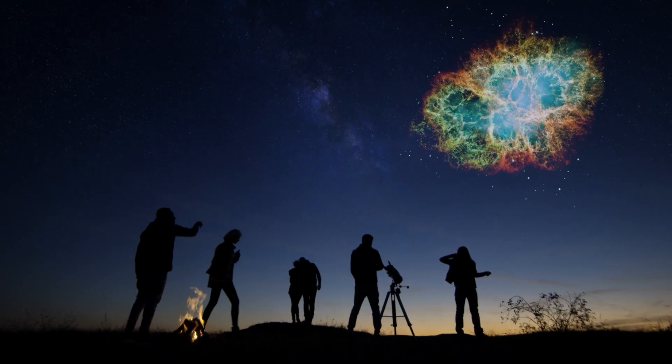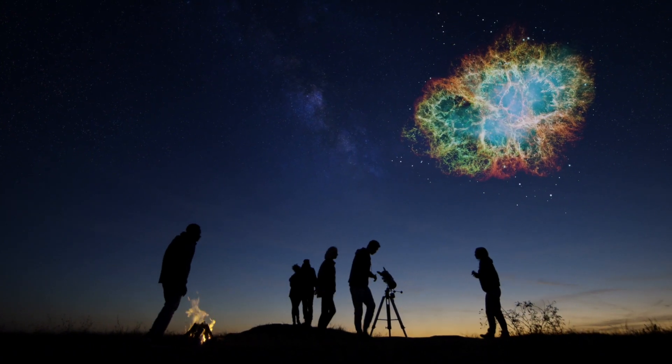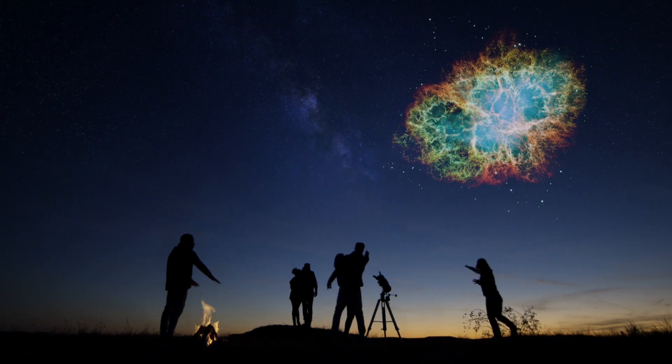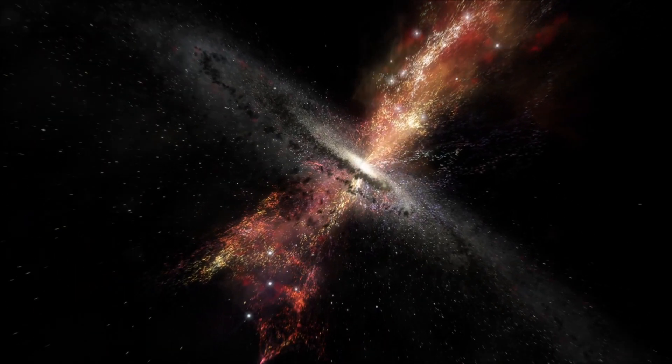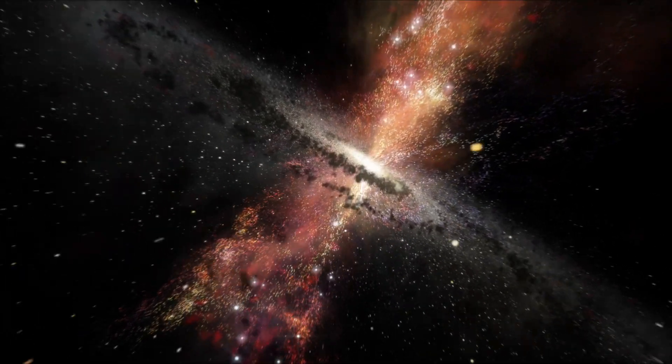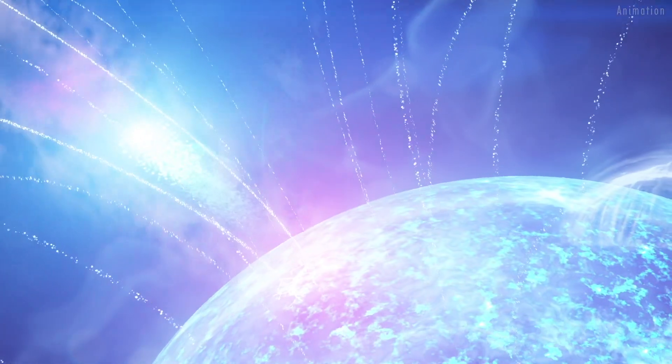All that would remain would be a dense core and hot gas called a nebula. A supernova is a long-lasting event that will illuminate the sky for weeks even during the day. The remnants of this stellar core which is left at the supernova explosion will follow one of two paths: a neutron star or a black hole.